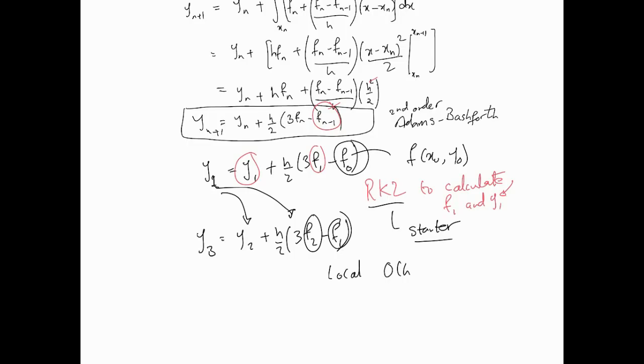Keep track of the error. The local truncation error here is order H cubed, and the global error is order H squared. So this is an order H squared method. This makes this particular method a two-step method. You have the first step where you use the initial RK2 to calculate this value, and then you continue with the Adams-Bashforth AB2.